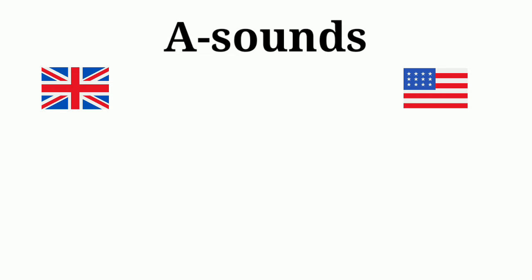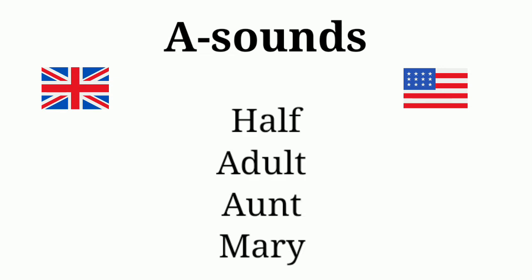Americans pronounce their A's as a flat 'a,' whereas in Britain it becomes more of an 'ah' sound. For example: 'half' / 'half,' 'adult' / 'adult,' 'aunt' / 'aunt.' You may have noticed that in India we too use the 'r' sound instead of the 'ah' sound.